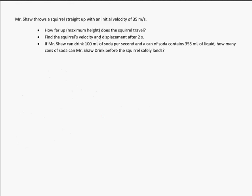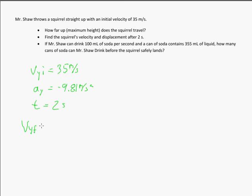Let's look at the second bullet point: find the squirrel's velocity and displacement after 2 seconds. We know VYI equals 35 meters per second, AY equals negative 9.81 meters per second squared, and our time is 2 seconds. We're searching for final velocity: VYF equals question mark. The formula to use is VYF equals VYI plus AY·T.